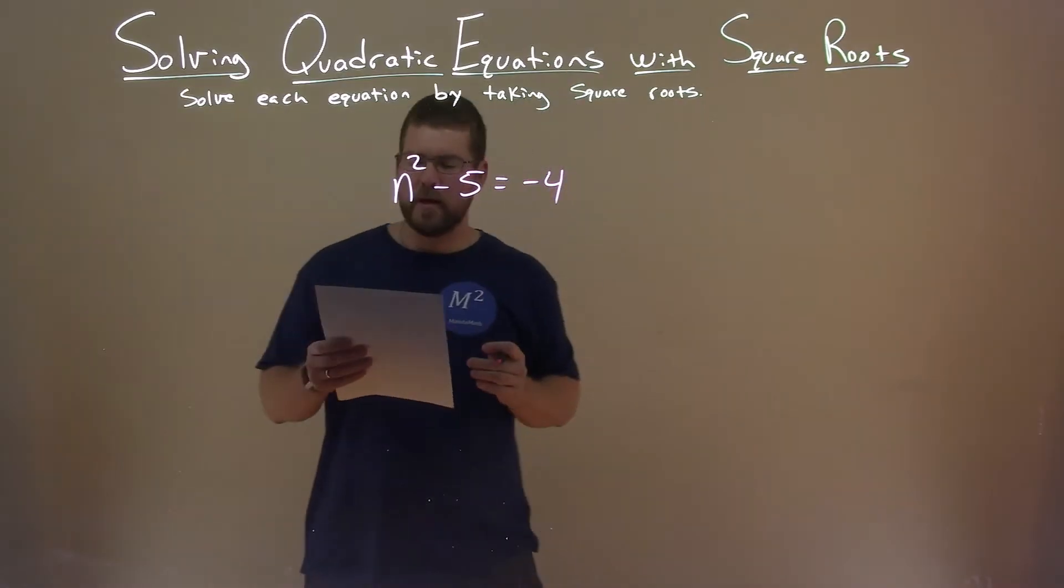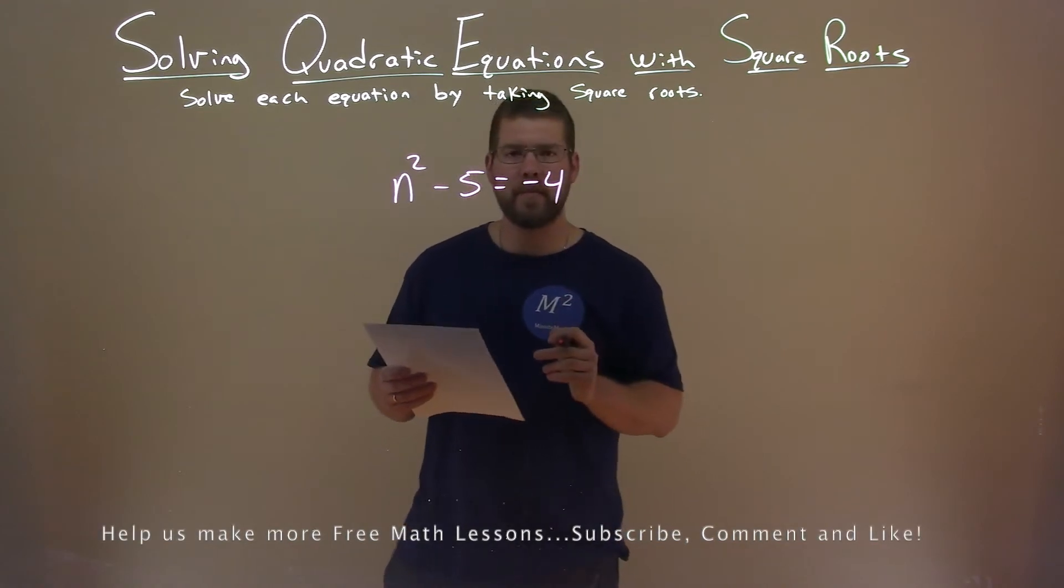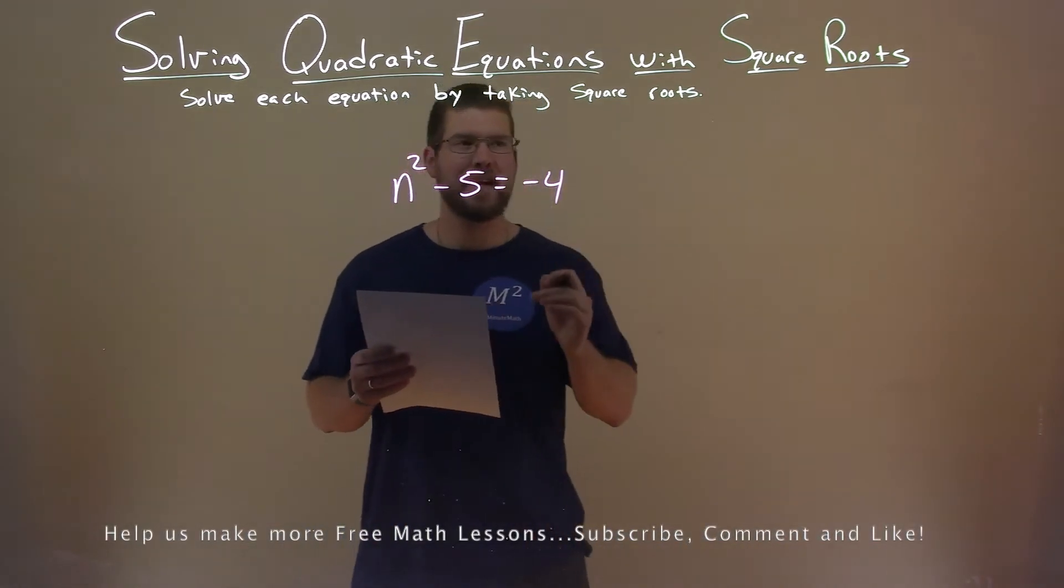We're given this problem right here, n squared minus 5 equals negative 4, and we want to solve this equation by taking square roots.